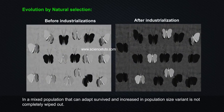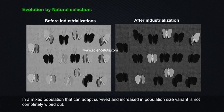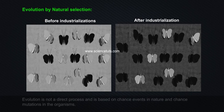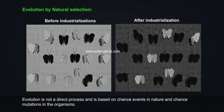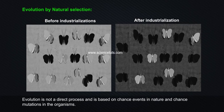In a mixed population, those that can adapt survive and increase in population size, while the other variant is not completely wiped out. In fact, evolution is not a direct process and is based on chance events in nature and chance mutations in organisms.